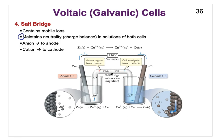Positive ions from the salt bridge come to balance that loss of positive charges. The ions in the salt bridge are typically soluble — group 1 metals like potassium or sodium as cations, with nitrates or chlorides as the anion. Anions migrate toward the anode, and cations migrate toward the cathode.